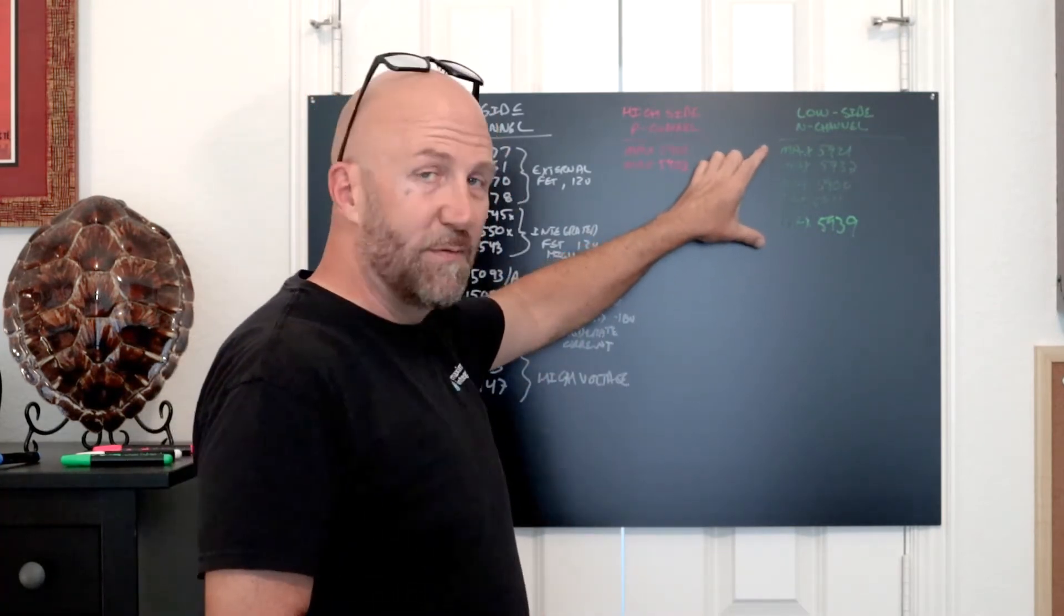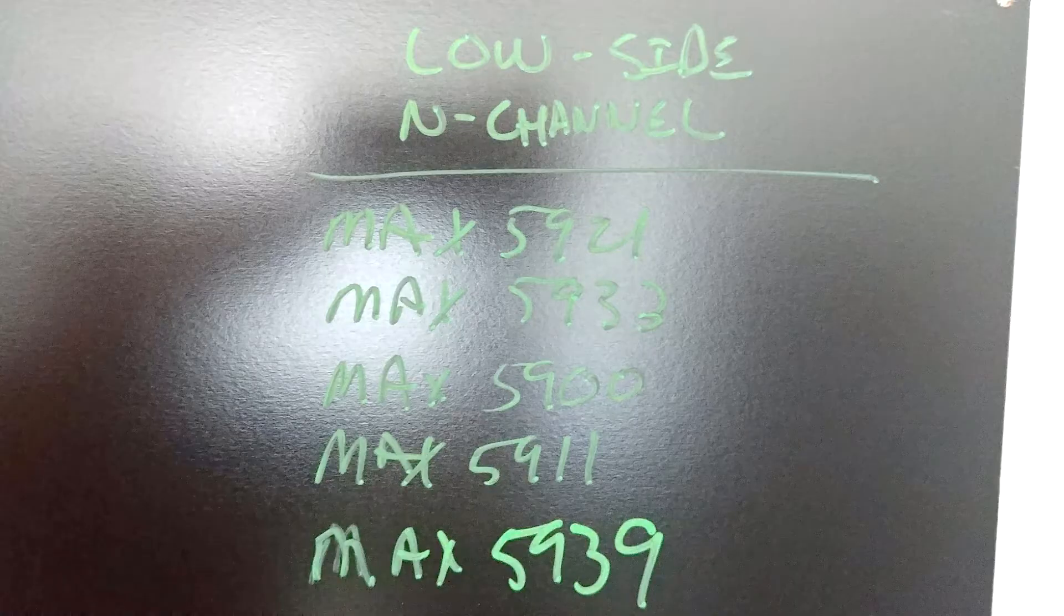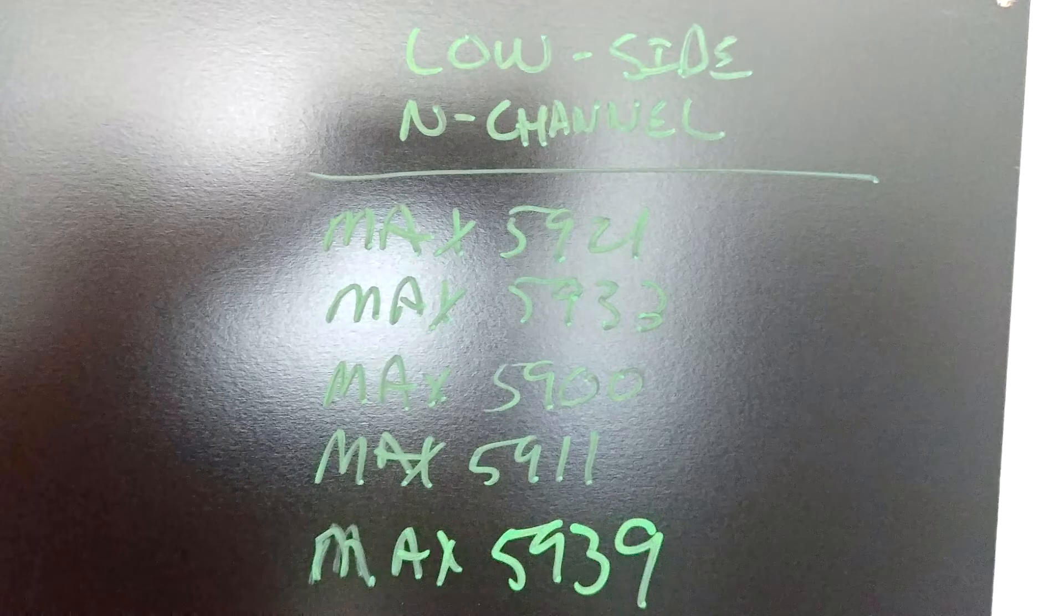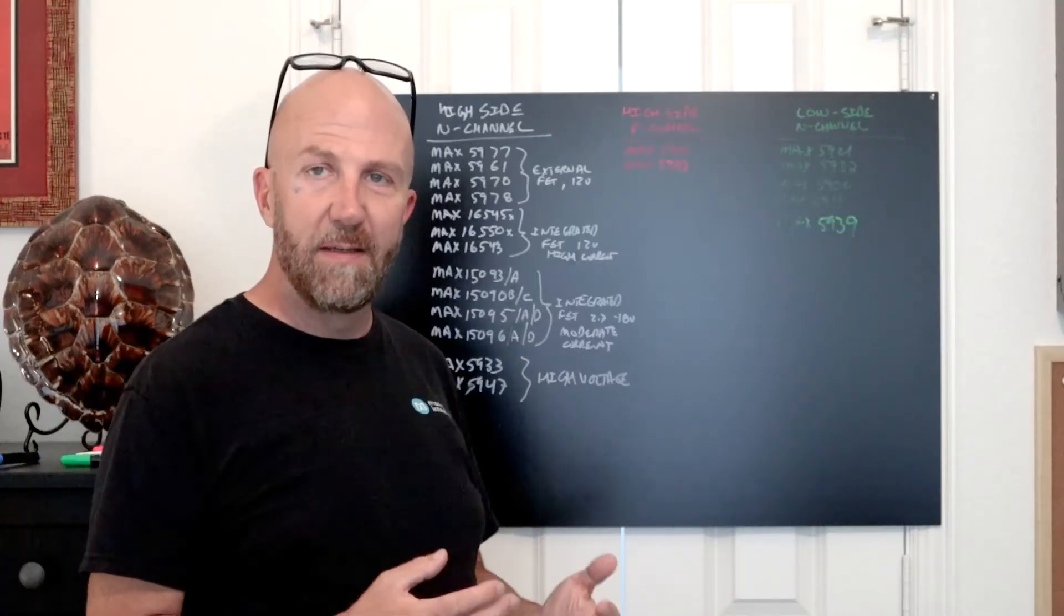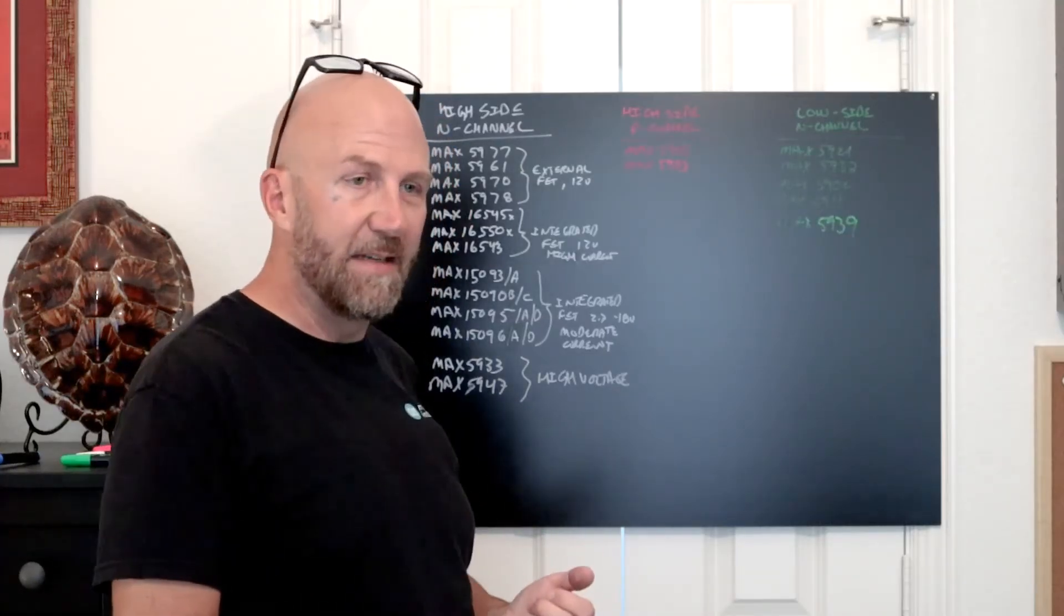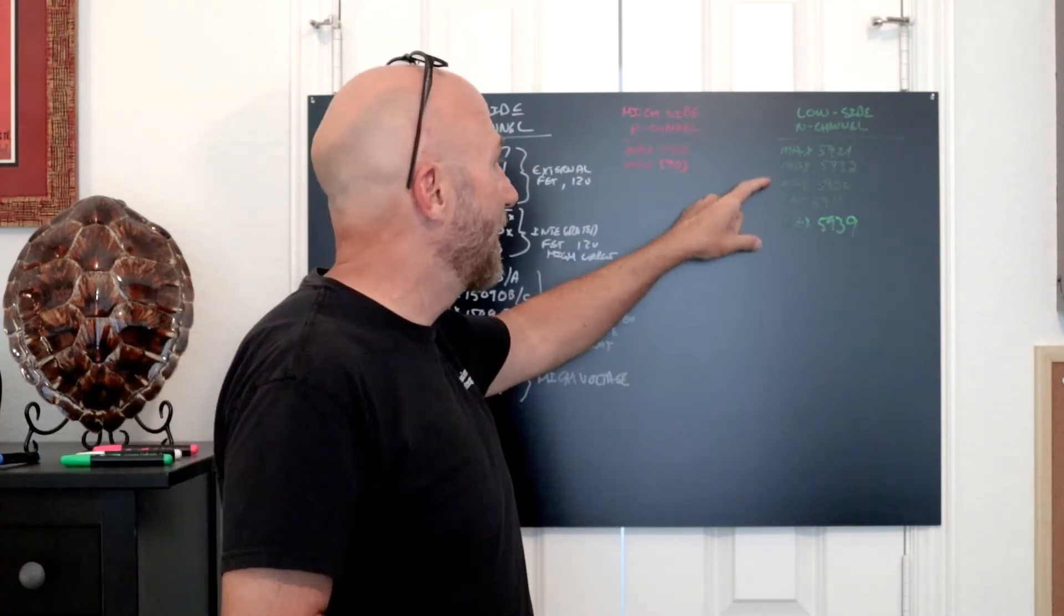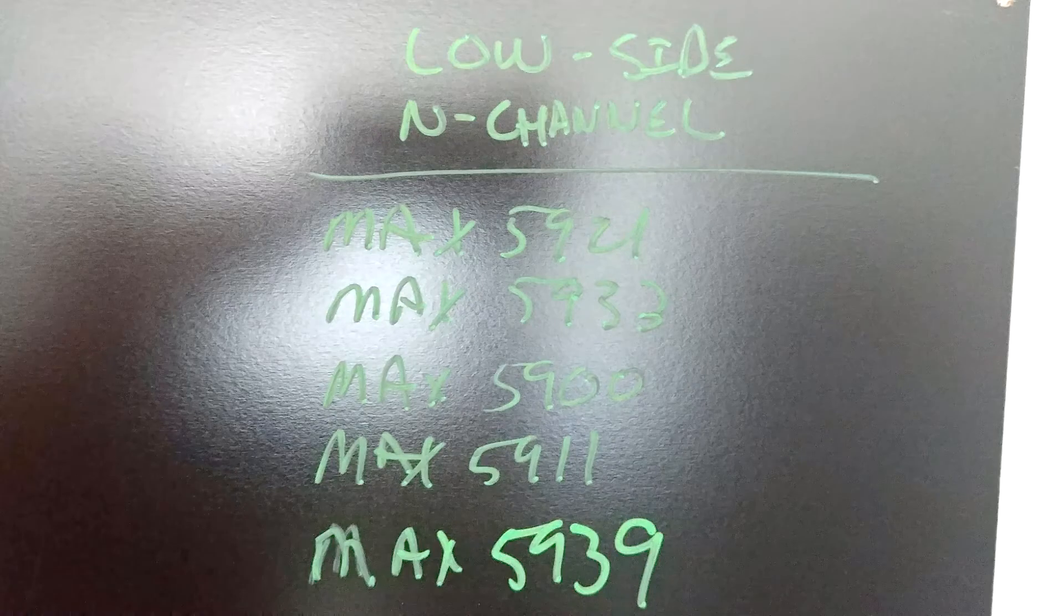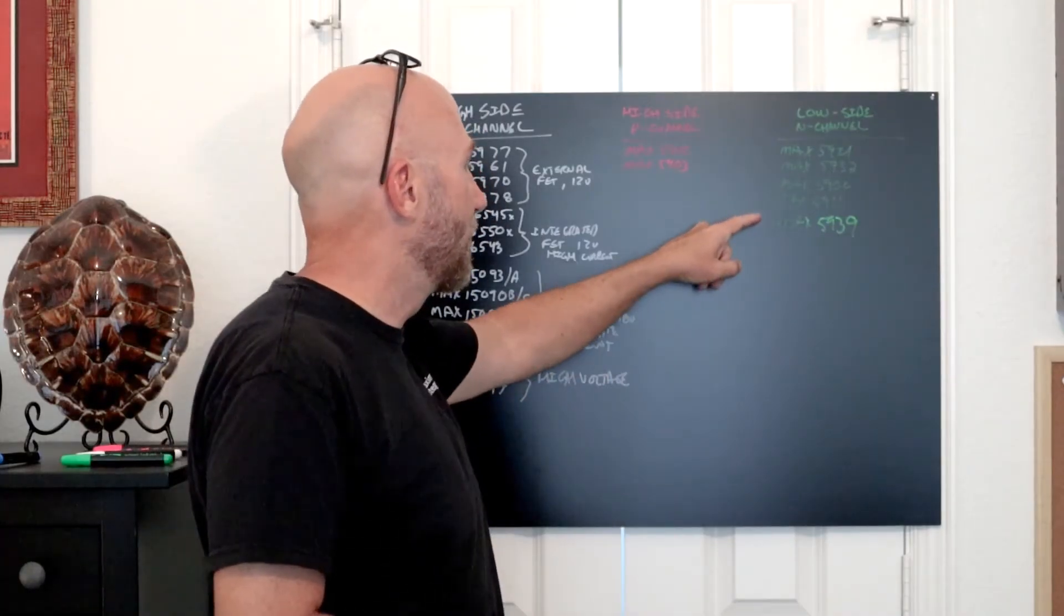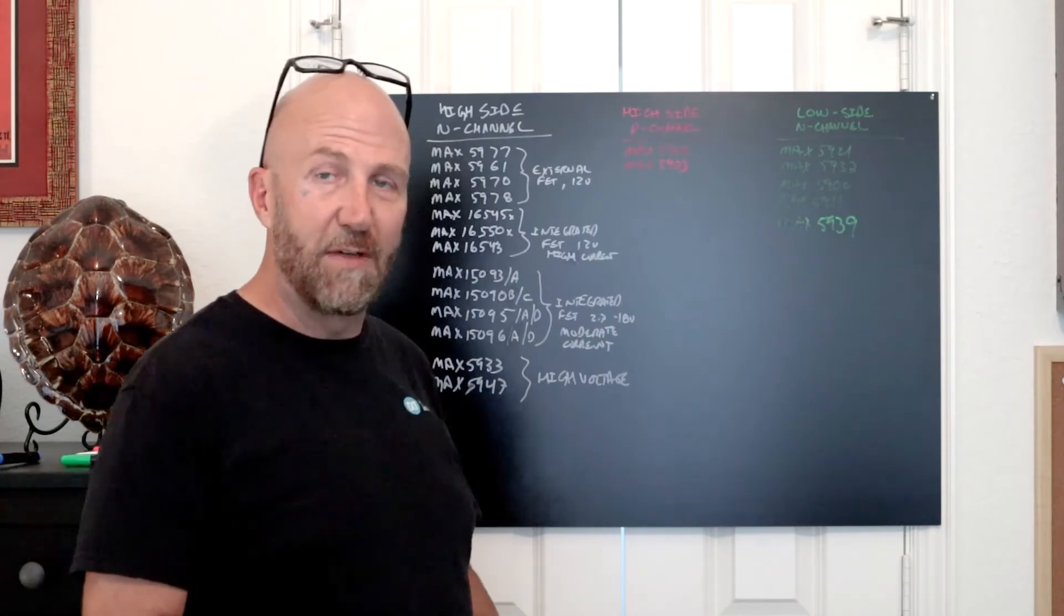Some examples are the MAX5921, MAX5933, which are in that pin compatible category competing against parts from LTC Analog. Then we have the MAX5900 and MAX5911, which are simpler low side N channel hot swap controllers, and the MAX5939.